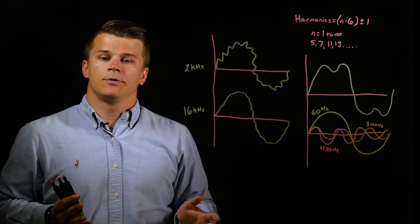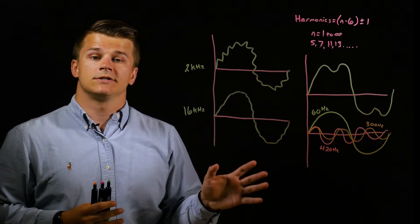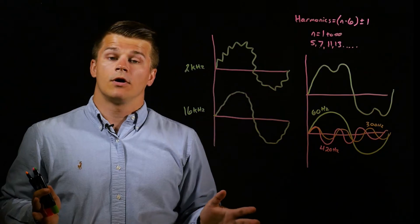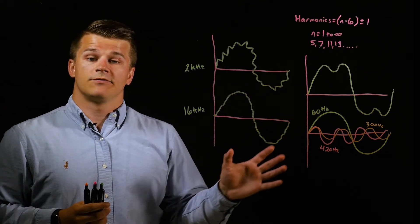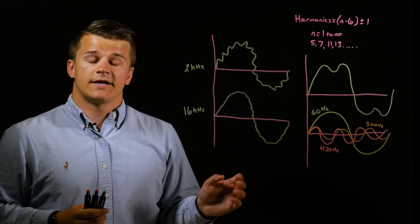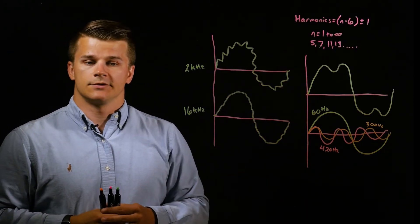So typically at KEB, we recommend your switching frequency is at least 10 times that of your output frequency. For example, if you have a 400 hertz output, you'd want to have at least 4 kilohertz on your switching frequency. And if you have an 800 hertz output, you'd want to have at least 8 kilohertz on your switching frequency.